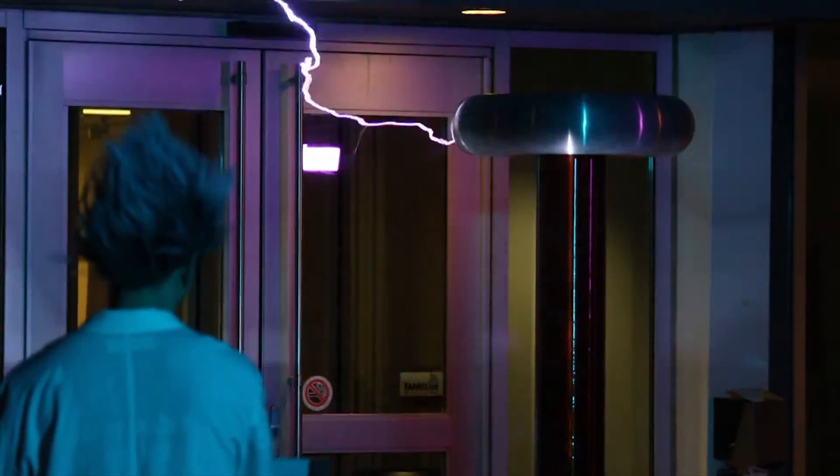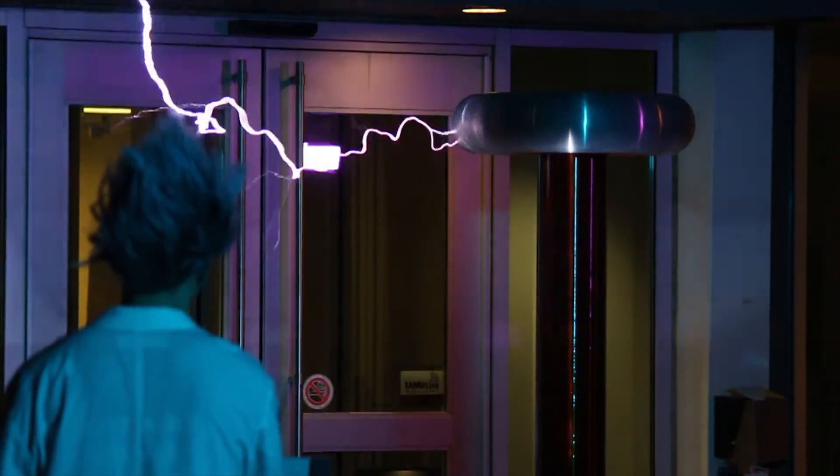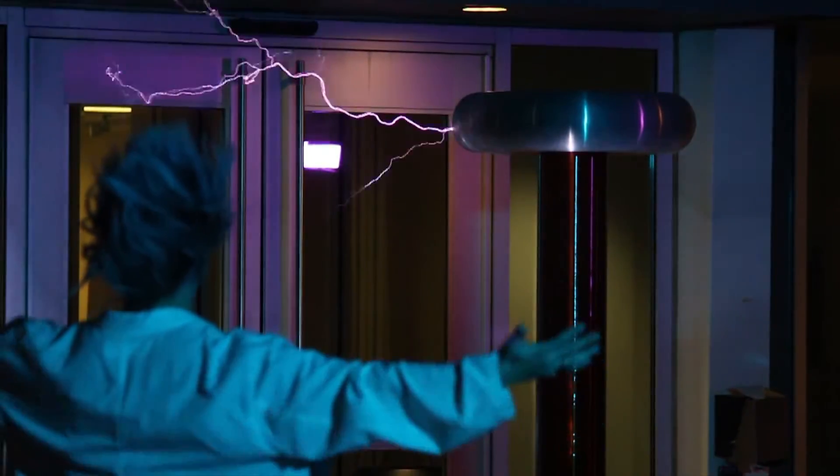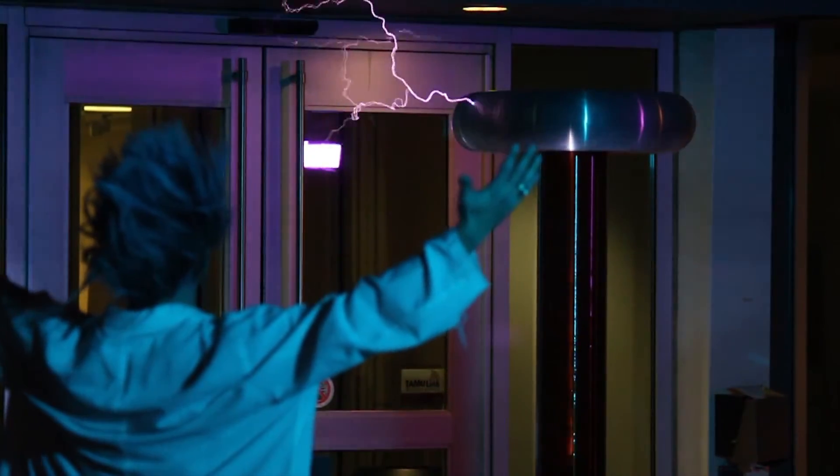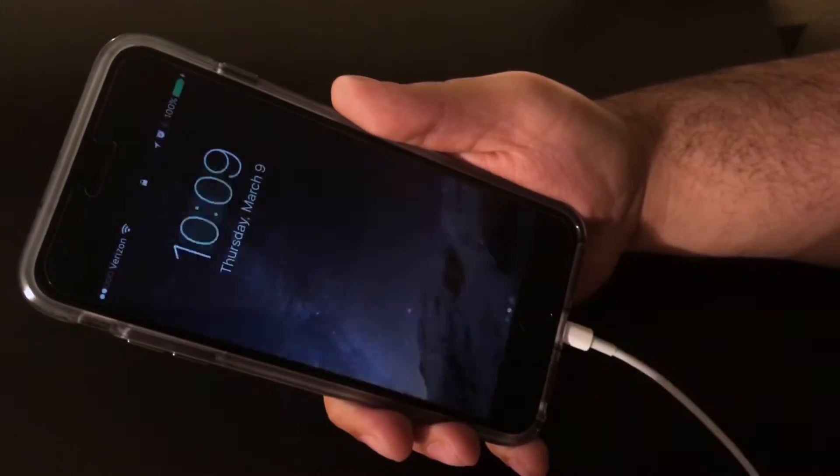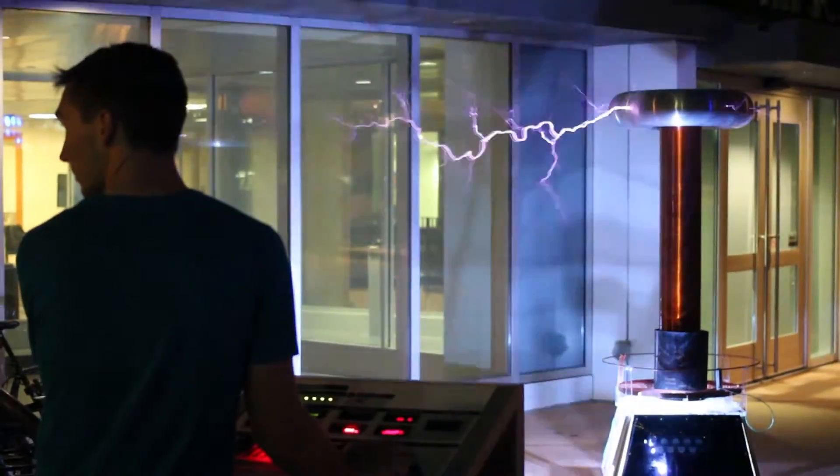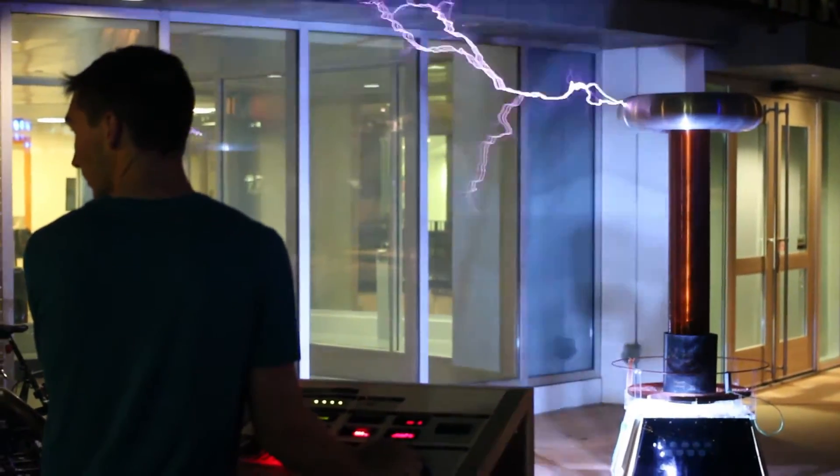Our Tesla coil can output over 1.8 million volts of electricity and 3 milliamps of current as it strikes into the air. This power could charge your phone in only a few seconds. How can this device be plugged into the wall and yet create these huge bolts of electricity?